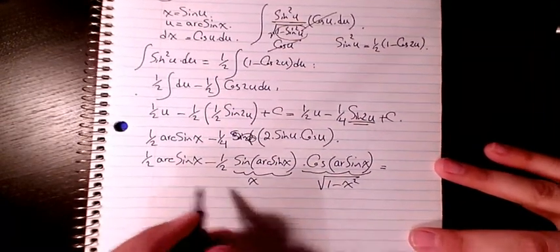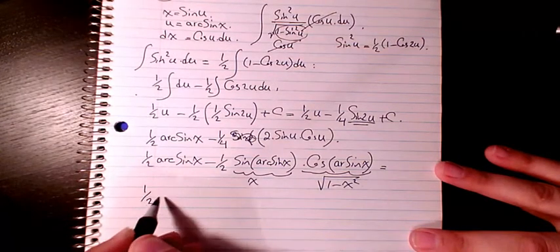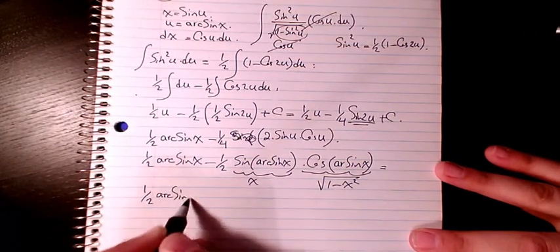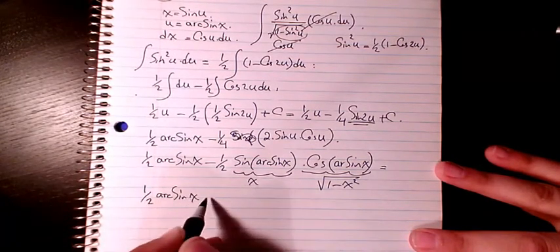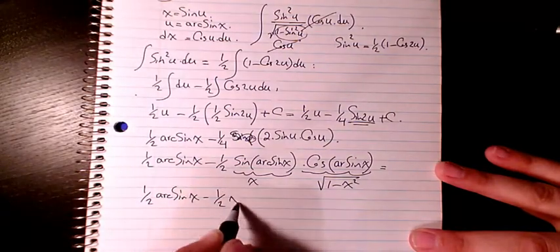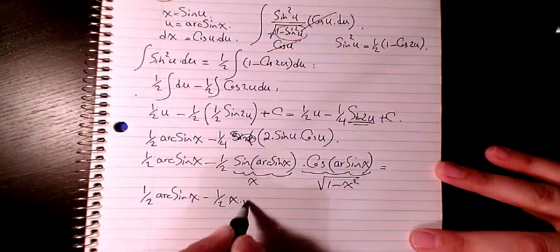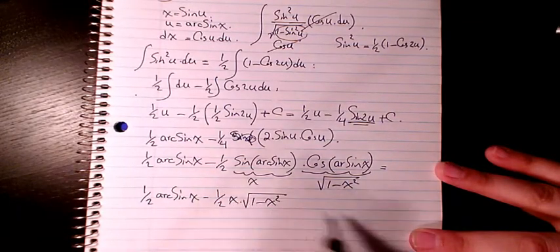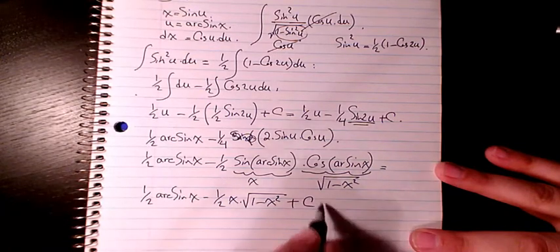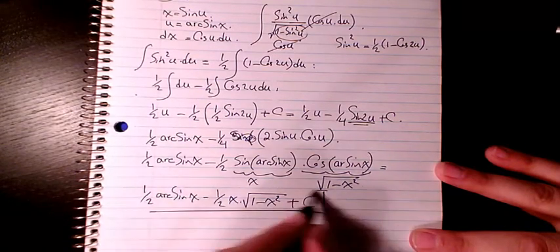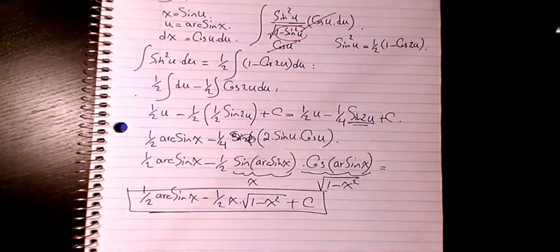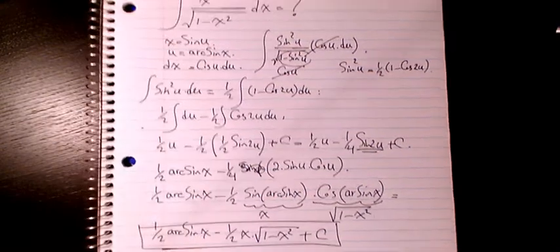So the final answer will be 1 over 2 arc sine x minus 1 over 2 times x times square root of 1 minus x squared, plus a constant. That will be the final answer to this question.